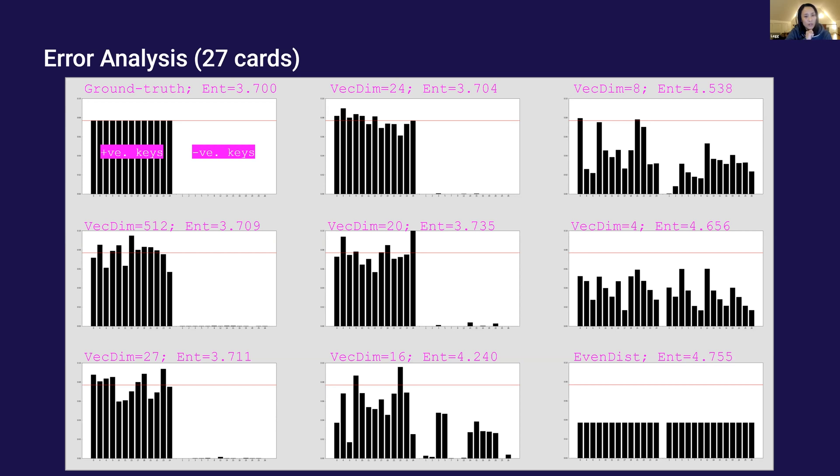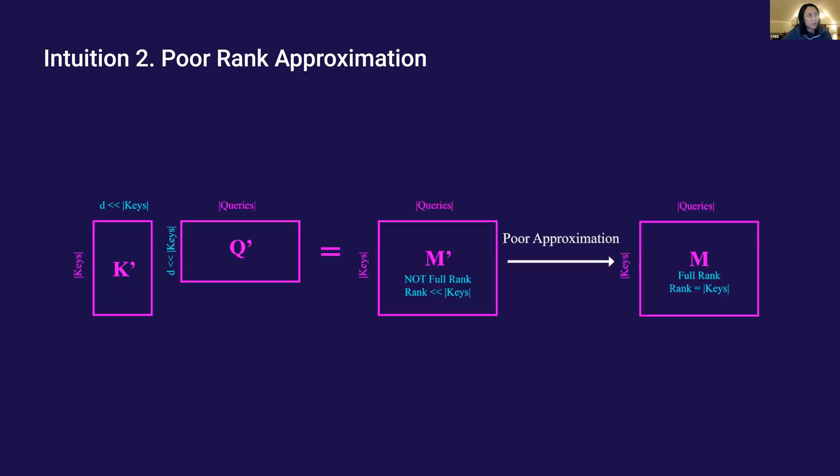And then there's a question on the intuition on rank. Let me also go to the corresponding slide. So the intuition is that if our query key matrix has rank, it's full rank. So in this case, if I have less keys than my queries, this full rank matrix would have the rank equal to the support of the keys, let's say 27.